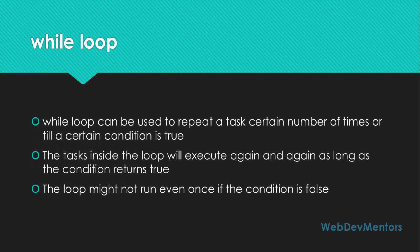The while loop can be used to repeat a task a certain number of times or till a certain condition is true. The task inside the loop will execute again and again as long as the condition returns true. When it returns false, the loop will break off and execution goes to the next line after the loop. The loop might not run even once if the condition is false at the initial stage itself.